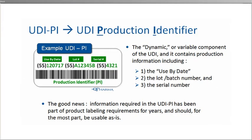The second part of the UDI is the production identifier, or UDI-PI. This is the dynamic component of the UDI, and changes with each production run or batch of the product. The UDI production identifier captures variable content like the use-by date, lot, batch number, and serial number if required. The good news is that most of the production identifier information is already being captured, as these elements have long been part of labeling requirements.